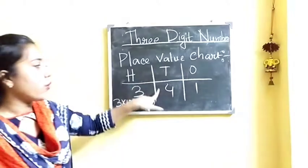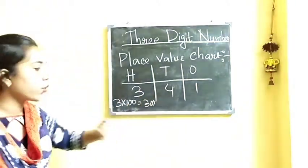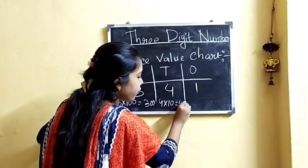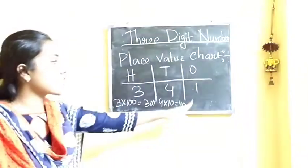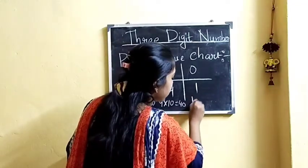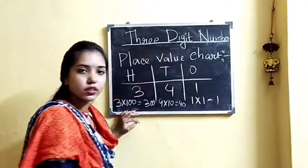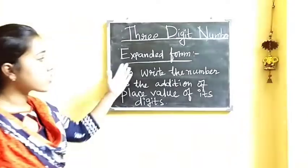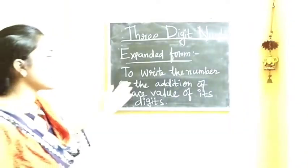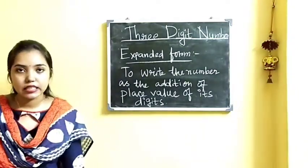4 is at the 10s place, so the place value of 4 is 4 × 10, which equals 40. And 1 is at the 1s place, so the place value of 1 is 1 × 1, which equals 1. Now, expanded form means to write the number as the addition of the place values of its digits.